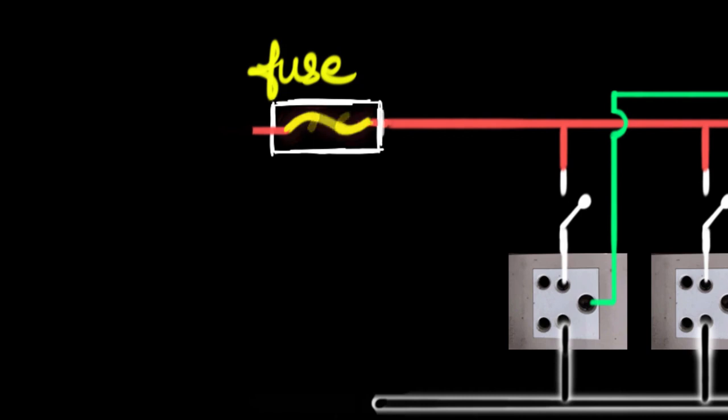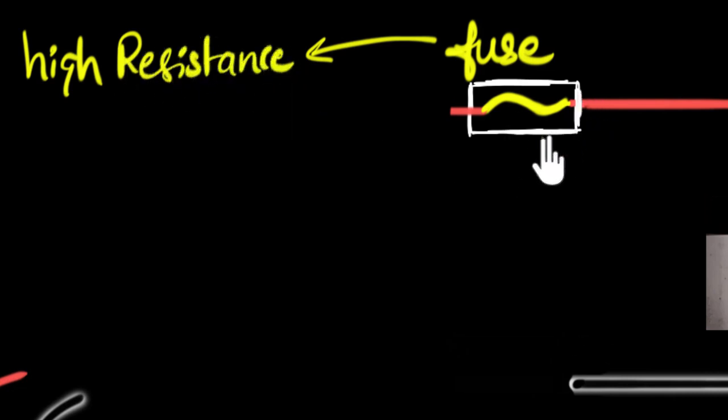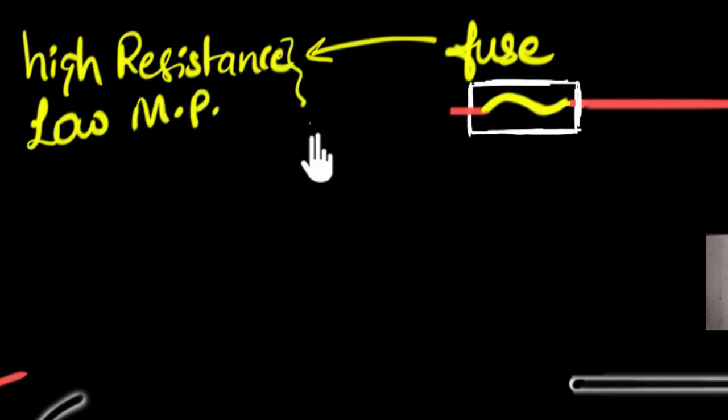And how do we build a wire like that? What are the properties of this wire? Well, a couple of important properties would be: one, it needs to have a very high resistance compared to the rest of the wires. Why? Because a high resistance ensures more heating effect. We have seen that before. As the current flows through any object, if it has more resistance, it will have more heating. And to ensure that it melts quickly, it will have low melting point. So with these two features, a fuse wire can be built to protect our circuits.